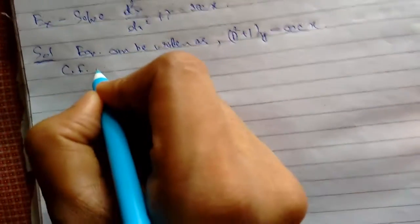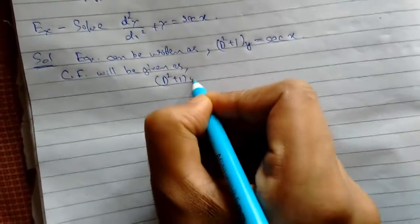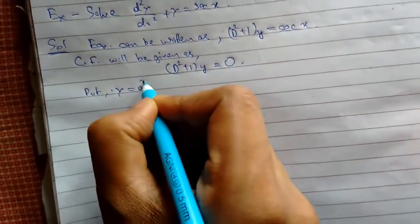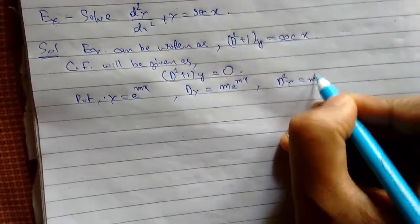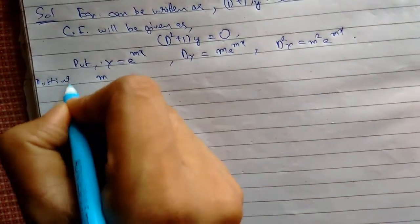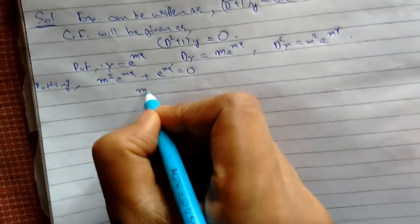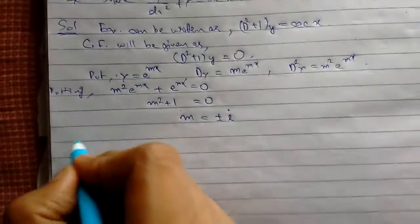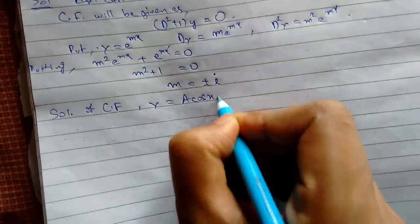The equation can be written as F(x) = sec(x). Now we find the CF as usual. Setting the homogeneous equation D²+1 = 0 and substituting Y = e^(Mx), we get M²e^(Mx) + e^(Mx) = 0, giving M² + 1 = 0, so M = ±i. Therefore, the CF is Y = A cos(x) + B sin(x).